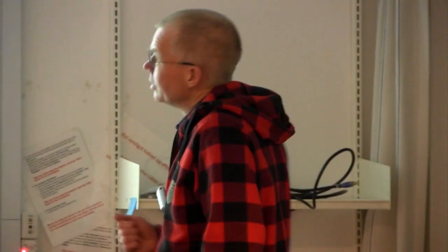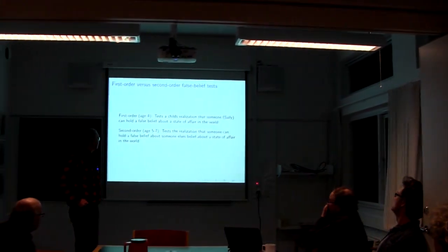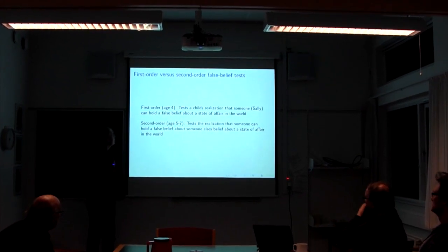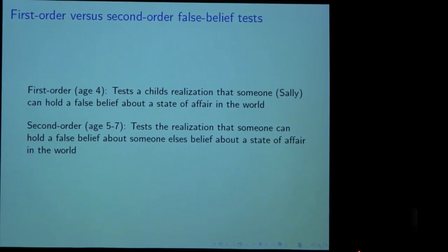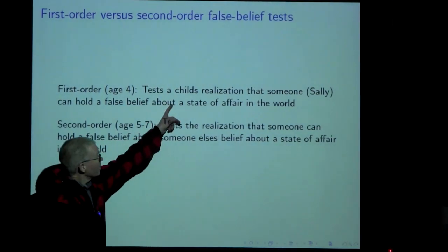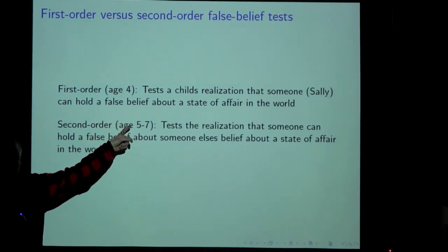To sum up: we took Prior's egocentric logic, added hybrid logical machinery — which Prior himself also did — and used it to formalize this psychological test in a way that is reasonably faithful to the actual reasoning when giving a correct answer. For further work: what I showed you is a so-called first-order false belief test. Children are able to solve it at about age four. In a first-order false belief test such as the Sally-Ann test, you are testing whether a child can realize that somebody else — Sally — can hold a false belief about the state of affairs, namely the position of the marble.